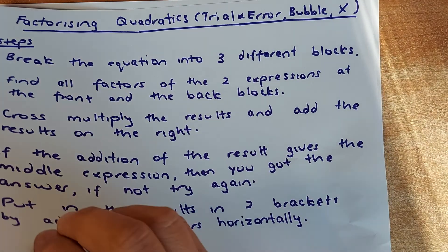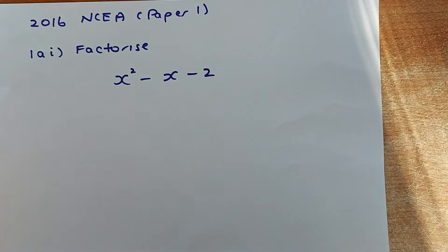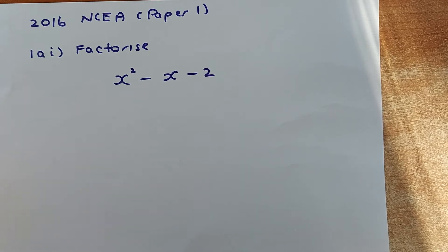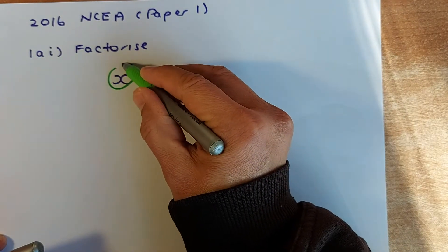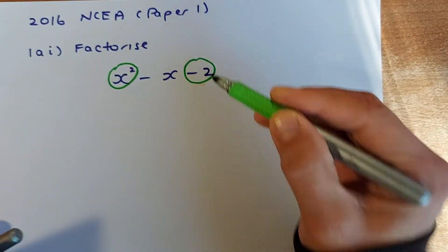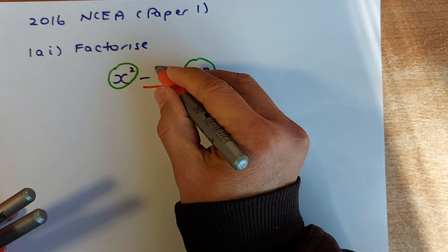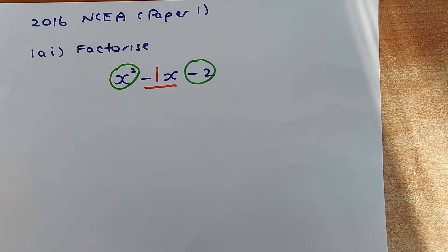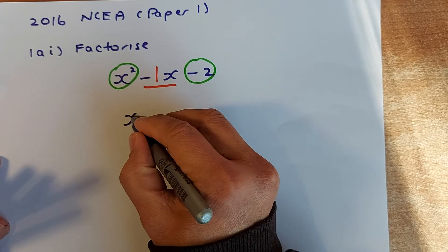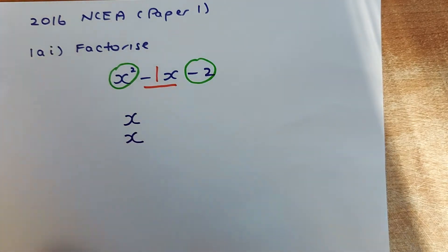We shall look at four examples from the NCA exams. The first one is from the 2016 NCA Paper 1. Step one: put it into three different blocks. The first block is x², the second block is -x, and the third is -2. Your job is to find the middle expression; since there's no coefficient, the answer must be -x. First, find all the factors of x²: the only possibility is x and x.